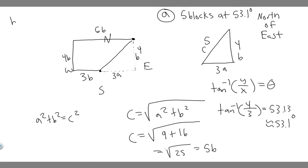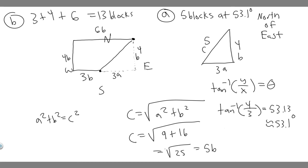Now let's do Part B, which is pretty simple. They just want to find the length of the path she walked. We add up the total amount she traveled: three plus four plus six. Three plus four is seven, plus six is 13. So 13 blocks is the total length of the path she traveled. To find total path length, you just add up all the segments. So 13 blocks is your answer to Part B.